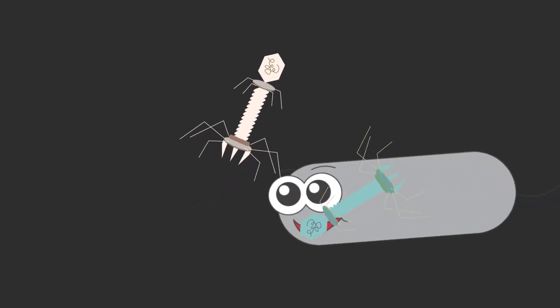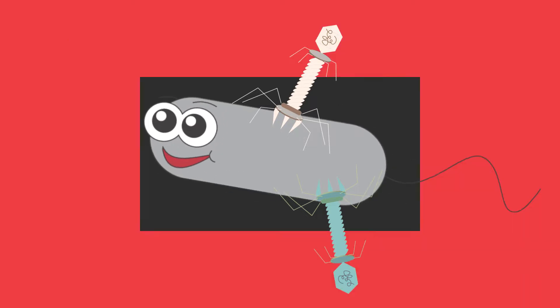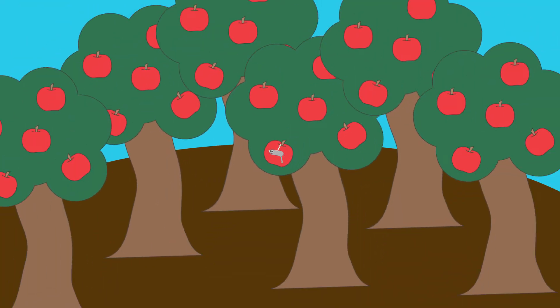We're on the hunt for novel phages that infect Zymomonas mobilis, none of which have been found before. To find phages, first we have to find Zymomonas. And we think Zymomonas lives on or around apples, so we went out sampling at an apple orchard.